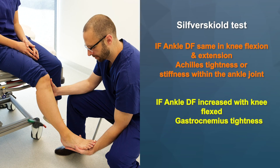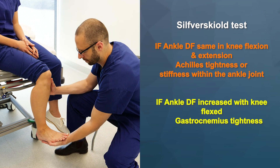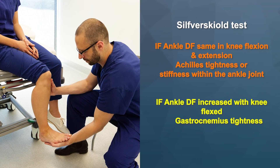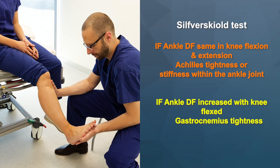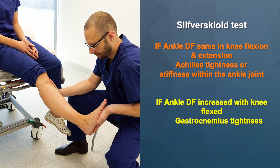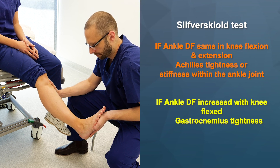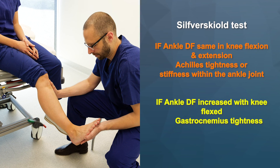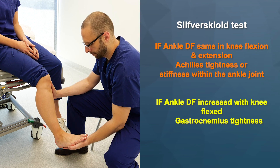Now for the Silfverskiöld test. With the patient seated, leg hanging, place one hand on the knee and the other hand and forearm cradling the ankle in maximal dorsiflexion. Gradually extend the knee, noticing the difference in dorsiflexion of the ankle at 90 degrees flexion compared to full extension. No difference suggests Achilles tightness, while increased dorsiflexion with the knee flexed suggests gastrocnemius tightness.